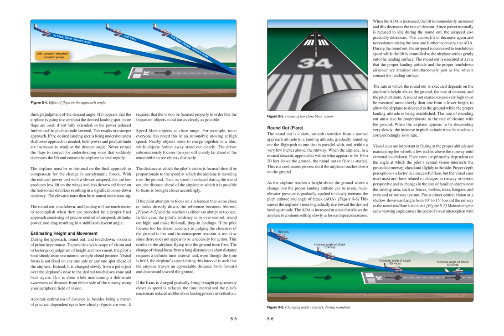This results in the airplane flying into the ground nose first. The change of visual focus from a long distance to a short distance requires a definite time interval and, even though the time is brief, the airplane travels an appreciable distance both forward and downward toward the ground. If the focus is changed gradually, being brought progressively closer as speed is reduced, the time interval and the pilot's reaction are reduced and the whole landing process smoothed out.